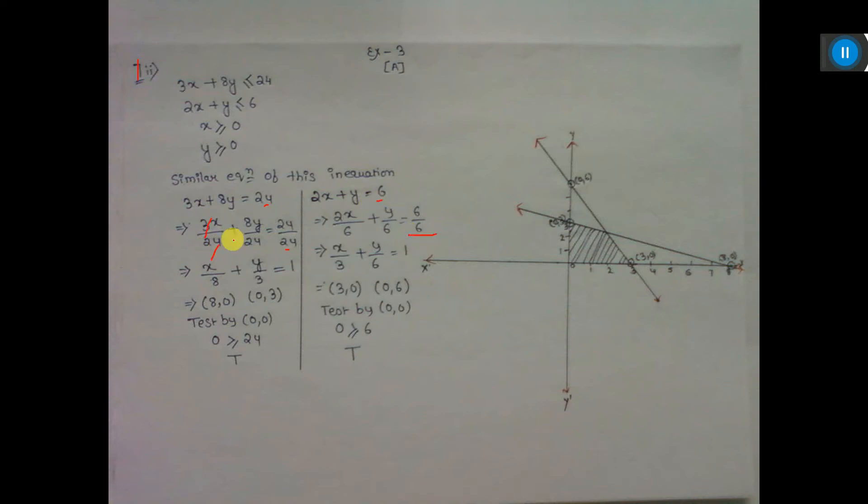Here 3 8s are, 2 3s are. Now see, what are the points coming: here 8, 0, 0, 3. x by a plus y by b equals 1 gives points a, 0 and 0, b—that means 8, 0 and 0, 3. Here 3, 0 and 0, 6 are the points we have got.